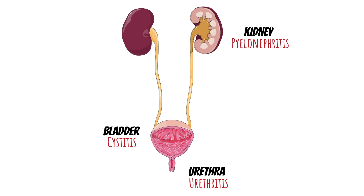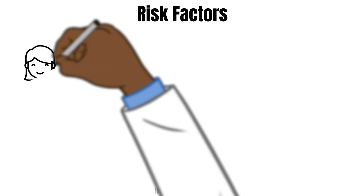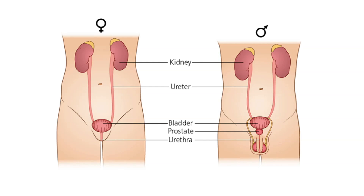Since UTIs are such a common infection, it's important to understand the risk factors. The first on the list is being female, because of the anatomy of the urinary tract — specifically the urethra. Females have a shorter urethra to the bladder compared to males, so bacteria around the anus have a shorter distance to travel. Wiping from back to front can introduce bacteria; it is recommended to wipe from front to back to prevent this.